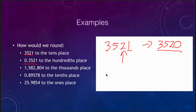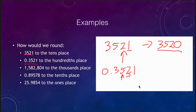What if we were to round 0.3521 to the hundredths place? We look at the number to the right of the hundredths digit, which is a two. Because that is in the small range, we can just drop the numbers to the right — and since we're to the right of the decimal, we just drop them and get 0.35. We don't add in any zeros when rounding to the right of the decimal point.